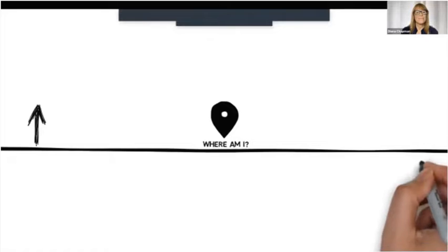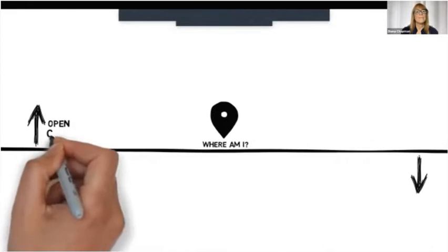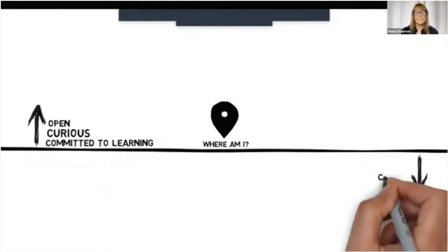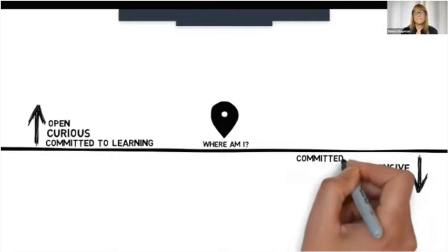Our location describes how we're being with what is occurring in our life right now. If we're above the line, we are open, curious, and committed to learning. If we are below the line, we are closed, defensive, and committed to being right.